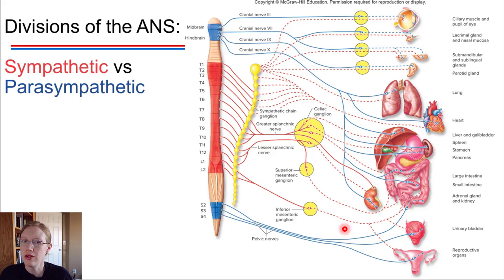You'll notice for the parasympathetic fibers, a lot of the ganglia exist either right next to the organ, the target organ, or even inside of the target organ that's being innervated. So like right here, here's the preganglionic neuron, here's the postganglionic neuron, that ganglia actually exists within the target organ itself. So a little bit different structure for the ganglia in the parasympathetic division.